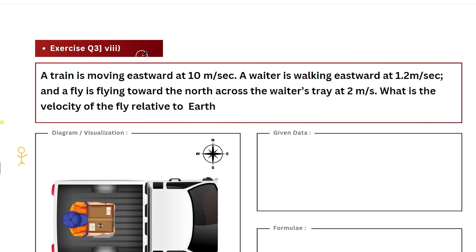In this video, we are solving question number 8 from the exercise for the chapter Motion in a Plane. In this particular question, we are going to study the motion of three particular objects. First of all, our object is a train which is moving on the earth or the tracks. And then we have a waiter who is doing a motion in the train.